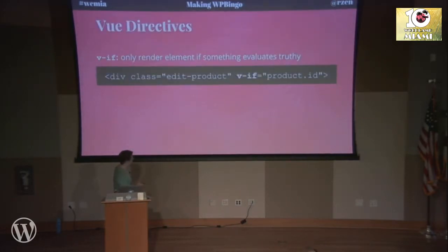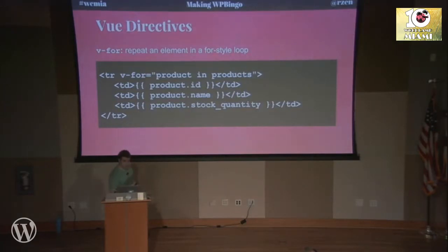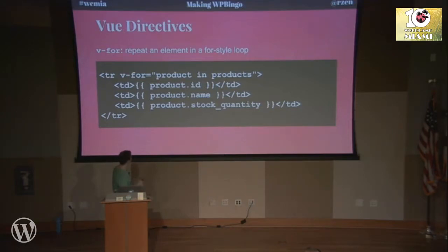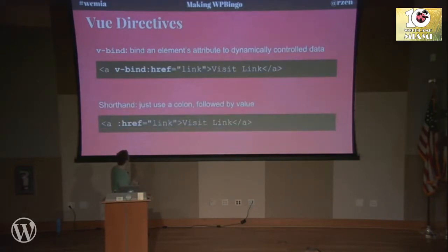You can have elements that are conditionally rendered using v-if — so this container will only output if we have a product ID. And there's v-for, so you can write for loops in your HTML: for product in products, output a table row with the ID, name, and stock quantity as table cells. It just iterates over every single one of those. I don't have to write any JavaScript for this — I just tell it this is the array of my products, this is what I'll call each item, and pop out the values using mustache syntax, which is double curly braces.